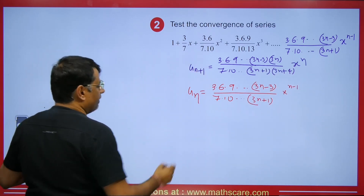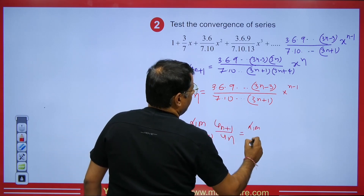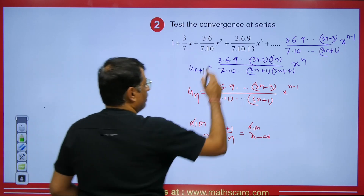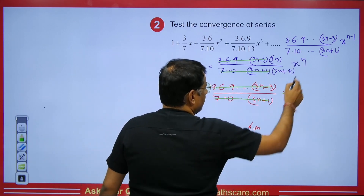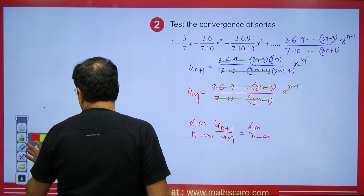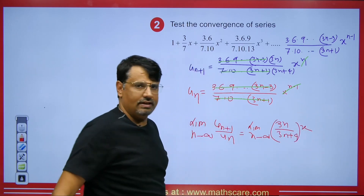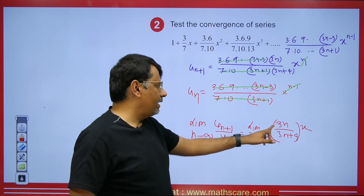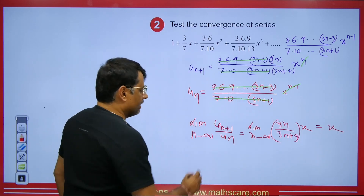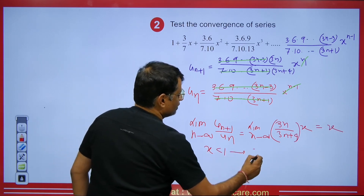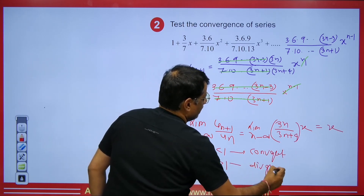Applying D'Alembert Ratio Test: limit as n tends to infinity of u_{n+1}/u_n. After cancellation, we are left with 3n / (3n + 4) times x. Taking n common and letting n → ∞, the 4/n term vanishes and we get the limit = x. By D'Alembert, if x < 1 the series converges; if x > 1 it diverges.